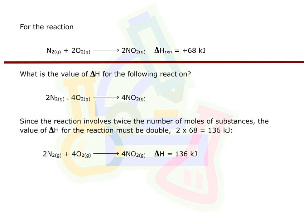What is the value of delta H for the following reaction? Since the reaction involves twice the number of moles of substances, the value of delta H for the reaction must be double. Two times 68 equals 136 kilojoules.